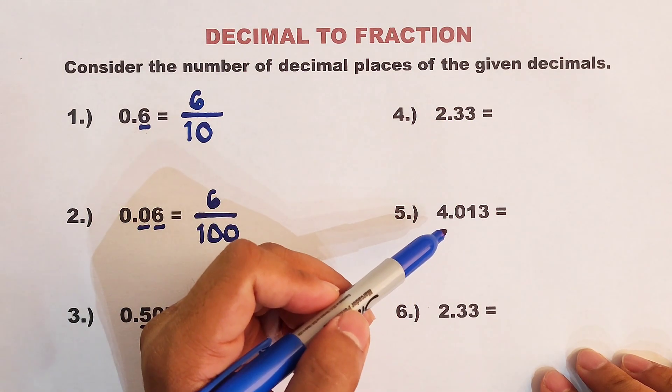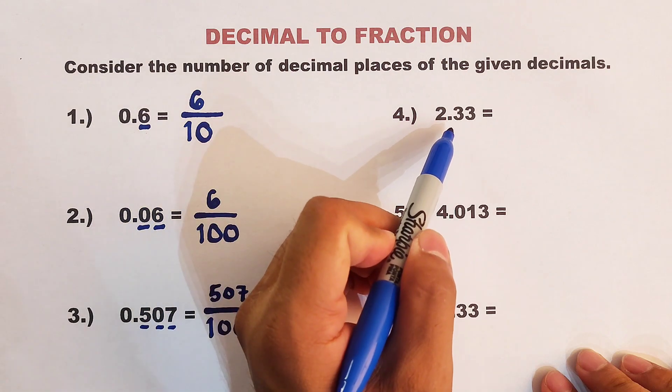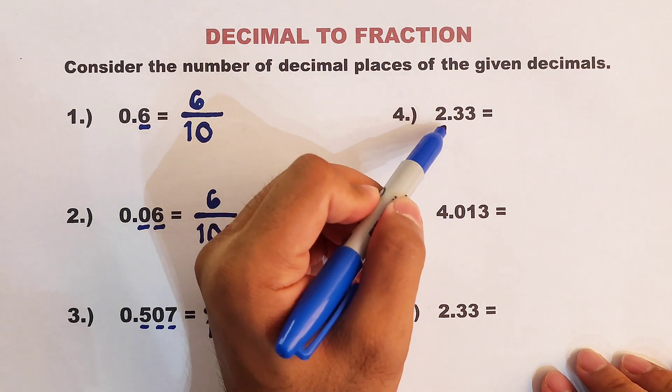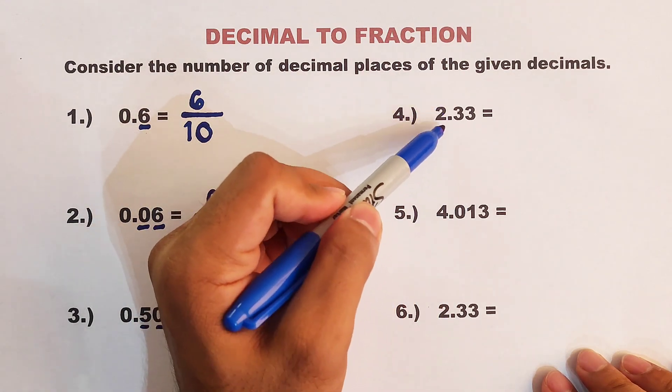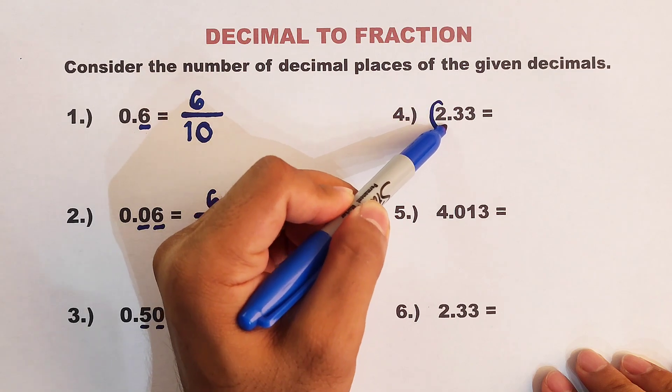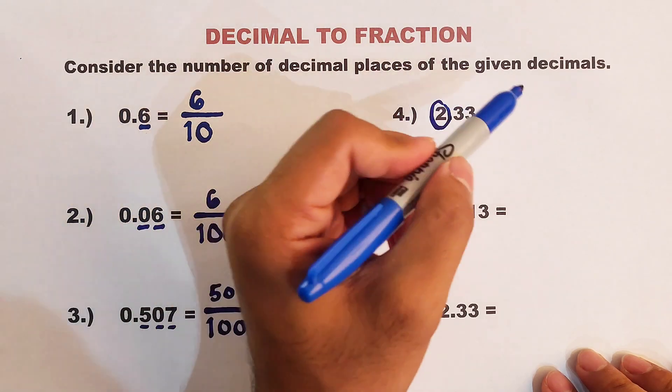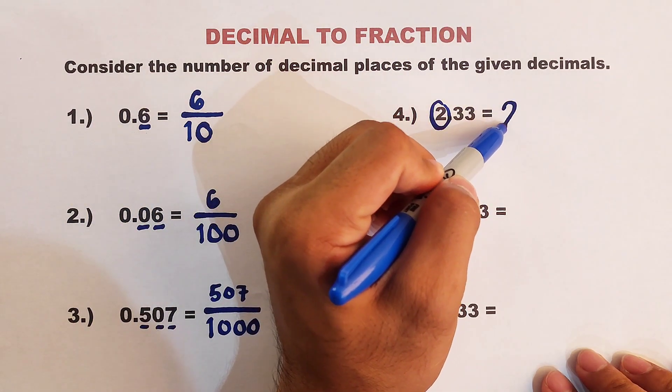Now let's move on to the next example. We have 2.33. As you can see, in this example, we have a whole number. What will happen? We will put here a whole number, meaning our answer will become a mixed number.